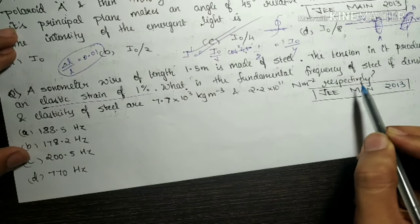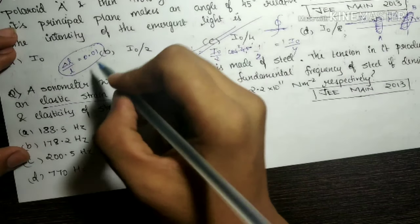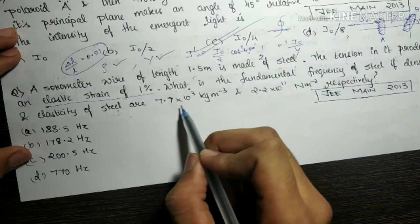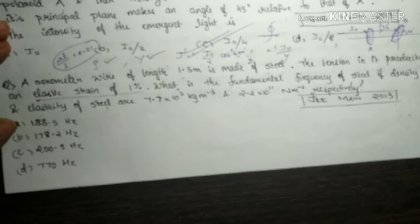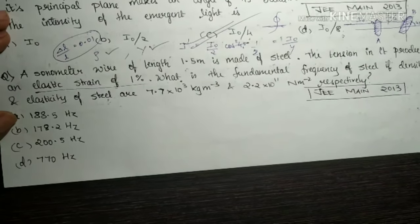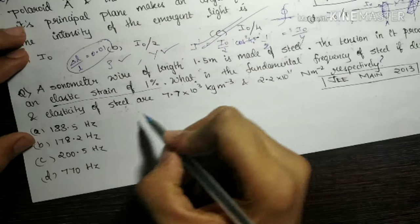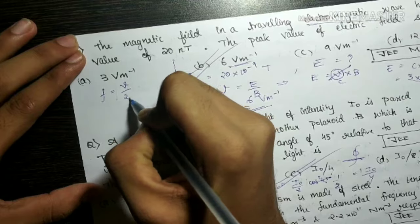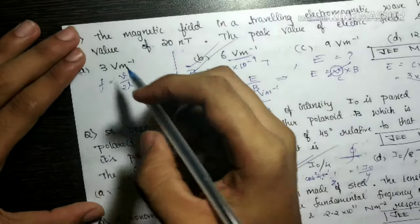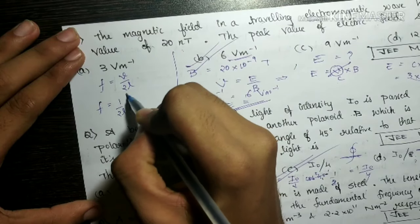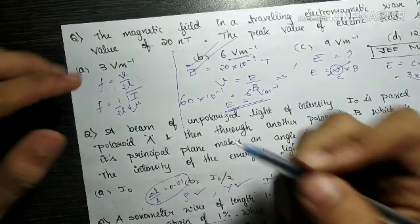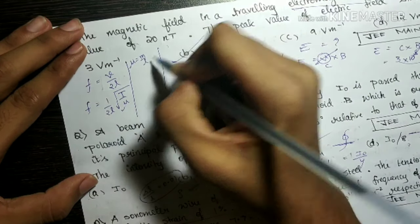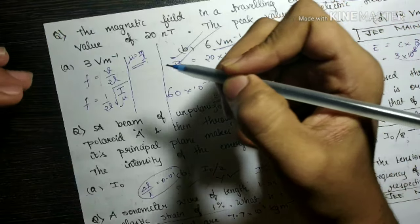The density ρ = 7.7×10³ kg/m³ and Young's modulus Y = 2.2×10¹¹ are given. We know that fundamental frequency is f = v/2L, where v is the velocity of the wave in the wire. This can be written as f = (1/2L)×√(T/μ), where T is the tension and μ is the mass per unit length.